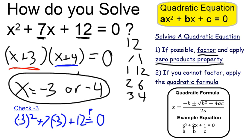If I put negative 3 into my original equation, that gives me negative 3 squared, which is 9, plus 7 times negative 3, which is minus 21. And 9 minus 21 gives me negative 12. When I add 12, it is equal to zero.